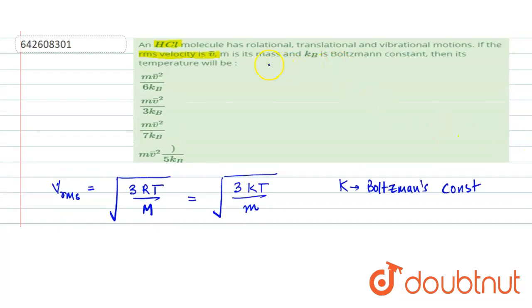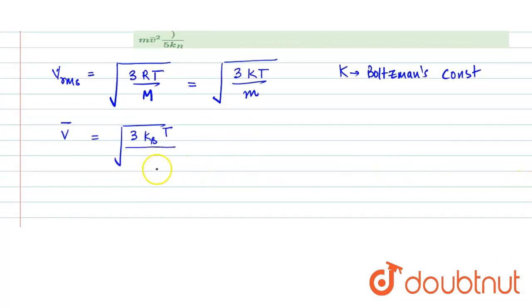So mass of the gas is given to us as M. So from here, we have to find the value of T. So let's do the square on both sides.